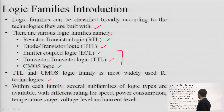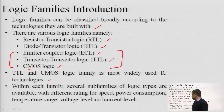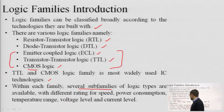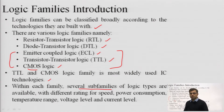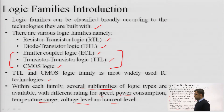We will be covering three logic families in detail: ECL, TTL, and CMOS, starting with TTL. Within each family there are several sub-families available with different ratings for speed and power consumption — for example, low power TTL, low power Schottky TTL, high speed. Logic families can be further sub-divided into sub-families depending on characteristics like speed, power consumption, temperature range, voltage level, and current level.